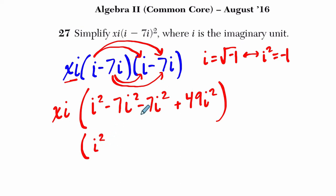i squared, this is minus 14i squared, plus 49. So it's negative 14, plus 49 is what? That's 35, right? i squared.